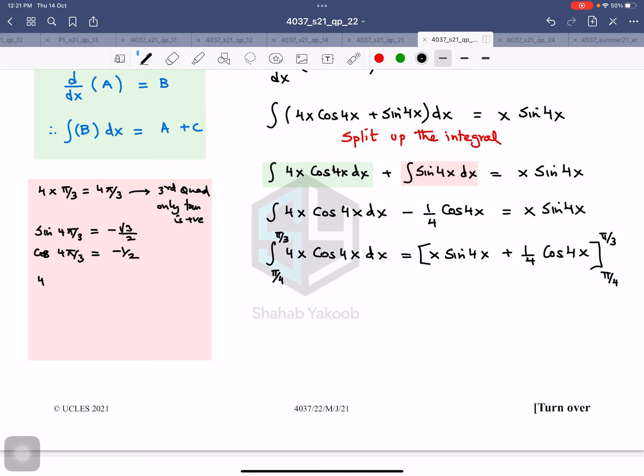Similarly, 4 times π/4 is simply π. And we know that sin(π), 180 degrees, is 0, whereas cos(π) is negative 1. So I'll be needing this value, I'll be needing this value, I'll be needing this value, and I'll be needing this value. So there are 4 values that I'll be needing.